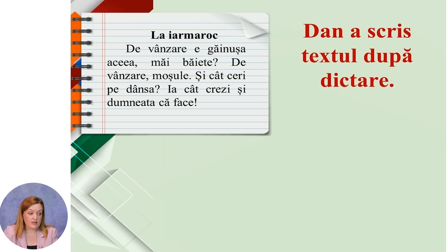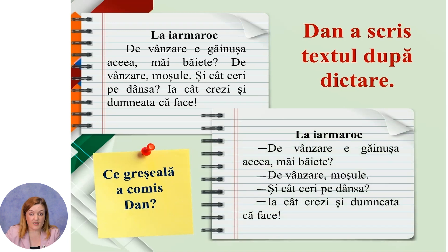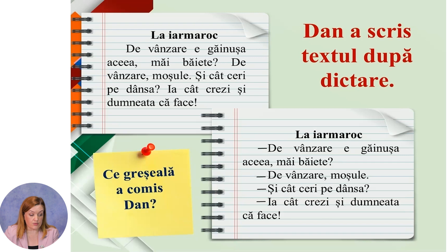În continuare, să rezolvăm problema. Dan a scris textul după dictare, după cum observați. Ce greșeală a comis Dan? Să citim textul. — La, iar mă rog. — De vânzare e găinușa ceea, măi băiete. — De vânzare, moșule. — Și cât ceri pe dânsa? — Ia cât crezi și dumneata că face. Dan a scris după dictare fără a marca replicile dialogului cu linie și fără a respecta aranjarea în pagină a dialogului. Iată și varianta corectă: titlul se scrie la mijlocul rândului, iar fiecare replică a dialogului se scrie din rând nou, din alineat.